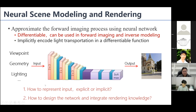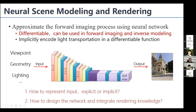Here is an example. Given a neural network, we can input the viewpoint, geometry, and light into the network. After some computation inside the network, we can output an image — that's called neural rendering. After using a neural network to approximate the rendering process, we can compute derivatives using backward propagation from the network to viewpoint, geometry, and light. That is the advantage of neural rendering.